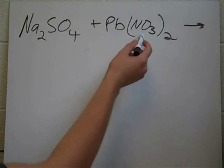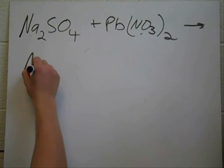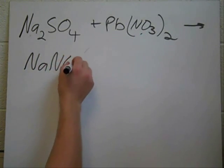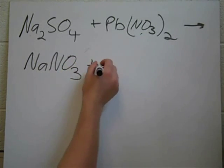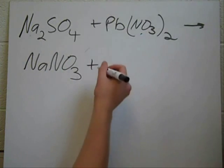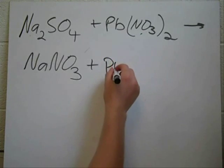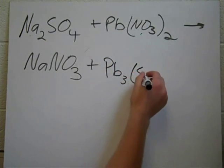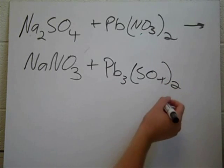Sodium is going to go with nitrate, so you do NaNO3, and lead is going to go with sulfate, so you have Pb3(SO4)2.